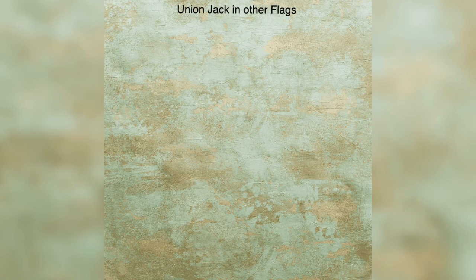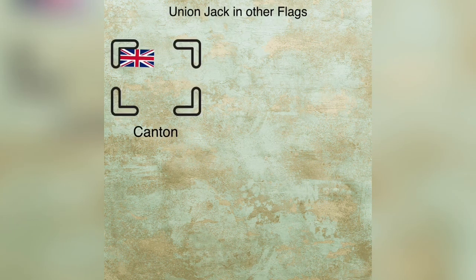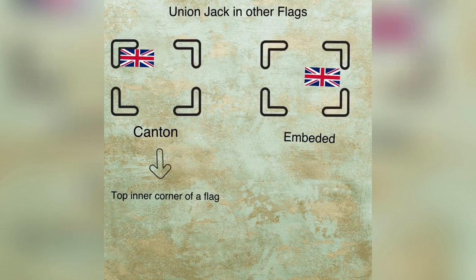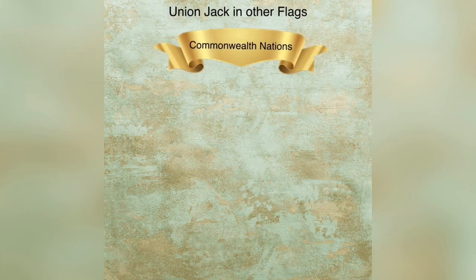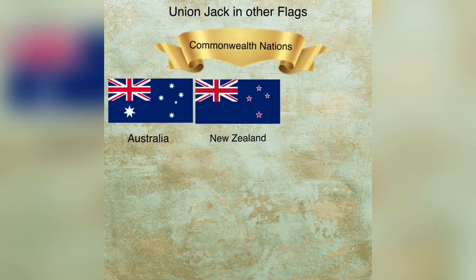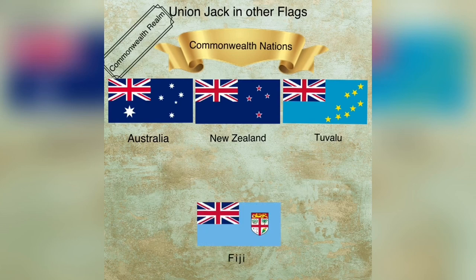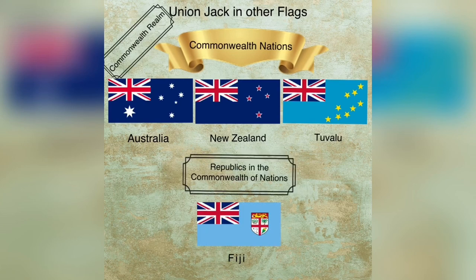The Union Jack is not merely the national flag of the United Kingdom but is also represented in many other flags, mostly in the canton — that is, the top inner corner of a flag. However, it is also found embedded as an element in various positions in some flags. It can be found in the national flags of some nations in the Commonwealth, these nations being Australia, New Zealand, Tuvalu from the Commonwealth realm, and Fiji from the republics in the Commonwealth nations.